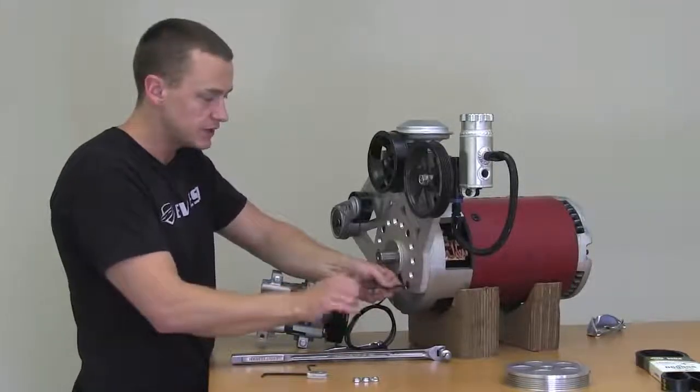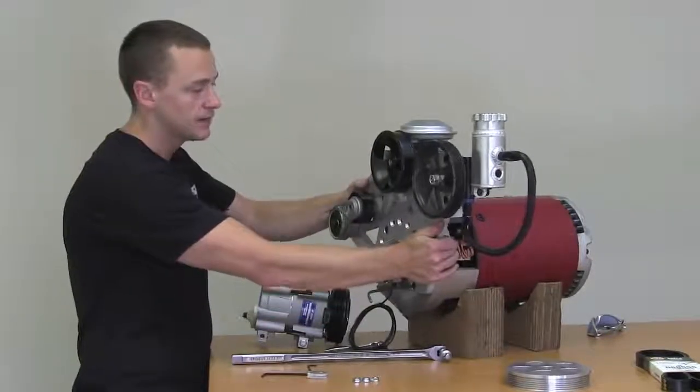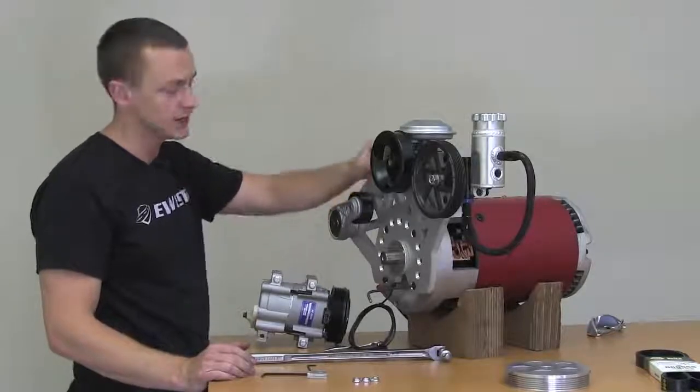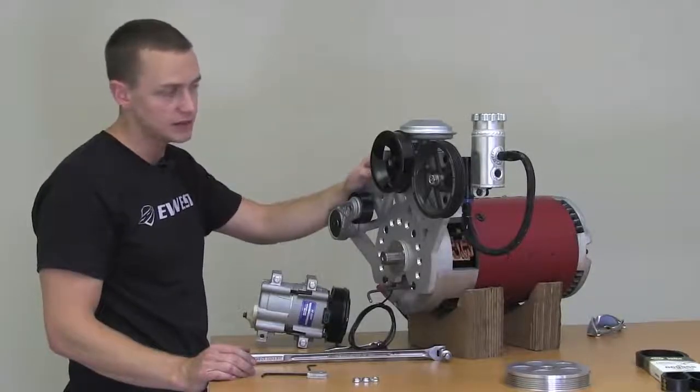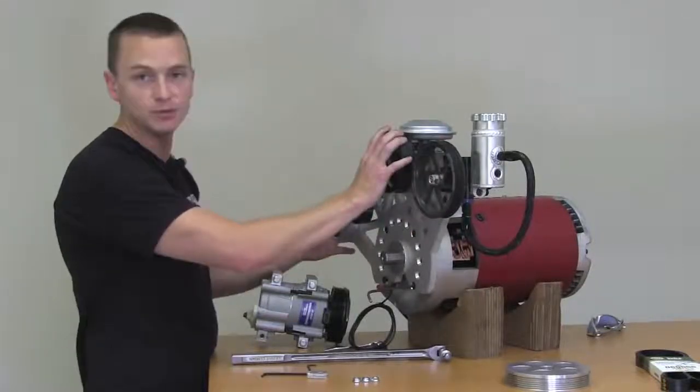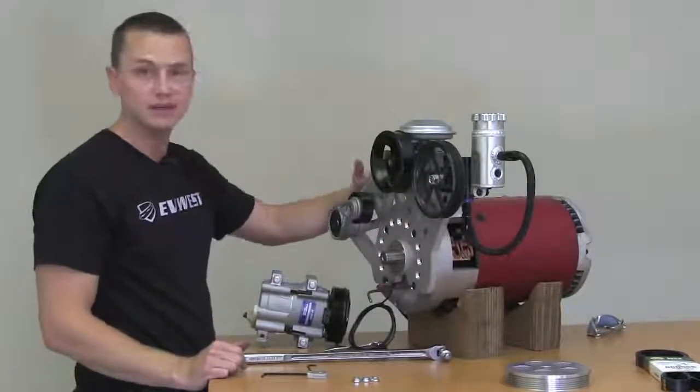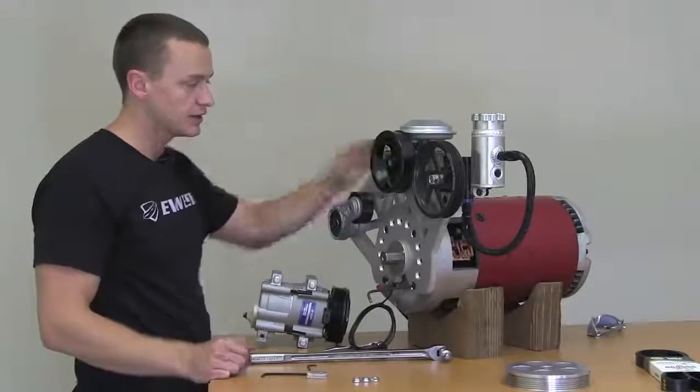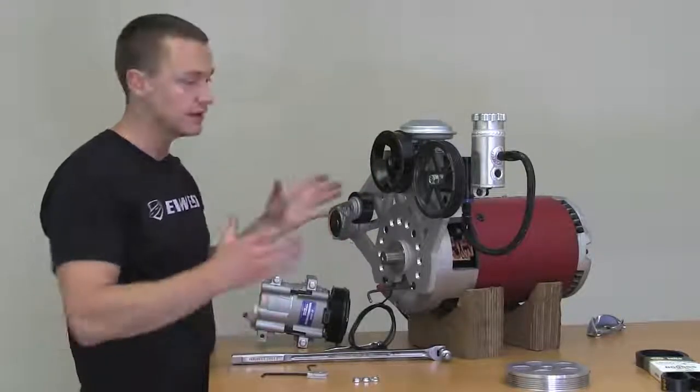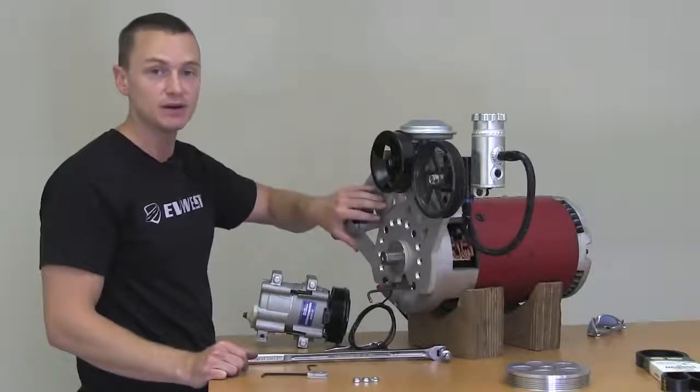Now the beauty about this system is that on this side, this can be swapped out for any air conditioning pump that you have. That's kind of the design of it. These components, the valves can be changed on this side. Vacuum is pretty much vacuum. So you're good with every vehicle there. The only thing that does really change is the air conditioning. So this bracket can be pulled off. And if you send in your air conditioning compressor, we can build a bracket that'll mount your air conditioning compressor to our system.